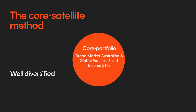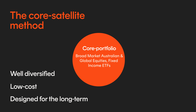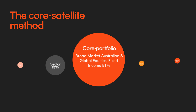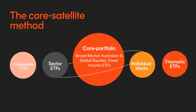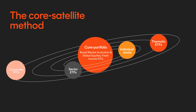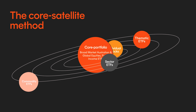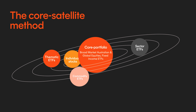The second strategy is known as the Core Satellite Method. This involves focusing on a core group of investments that are well diversified, low-cost, and designed to be held for the long term. The idea is that you check in and review these investments regularly. You then combine core investments with a smaller group of more tactical holdings, known as satellites.